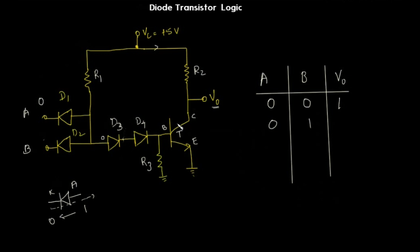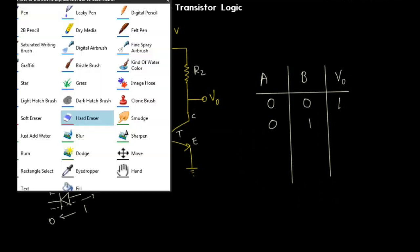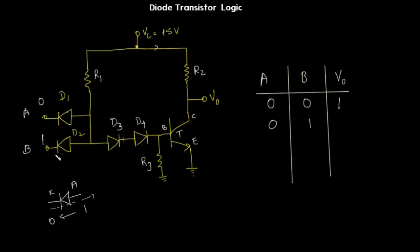For input 0,1: the cathode of D2 is kept high, so D2 will not conduct — it is cut off. The cathode of D1 is at low voltage, so D1 will start conducting and the low voltage propagates to the anode of diode D3. Since the anode of D3 is at low voltage, D3 is not conducting, D4 will not conduct, and transistor T will not conduct, so V₀ is going to get a high output, same as the 0,0 case.